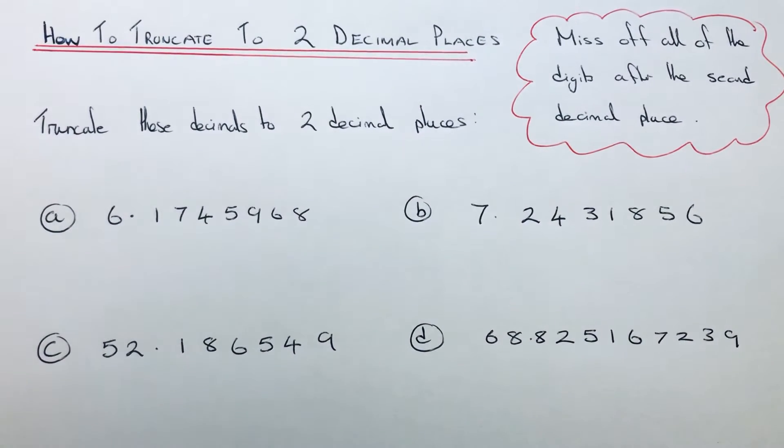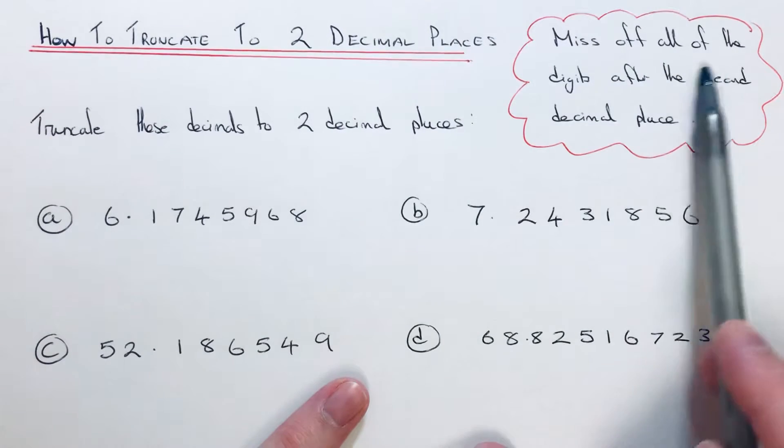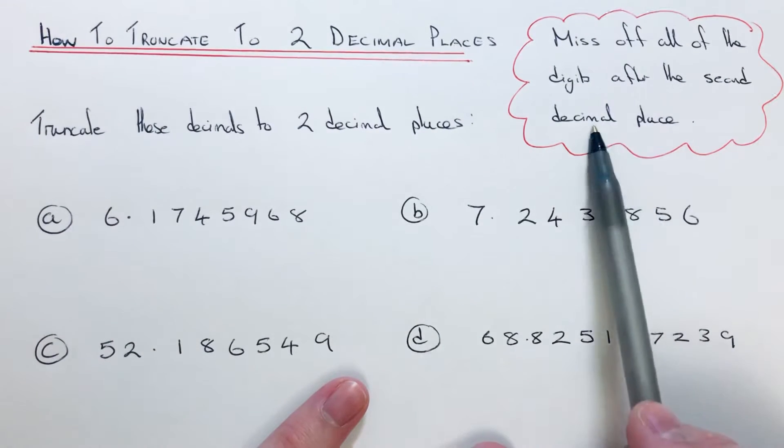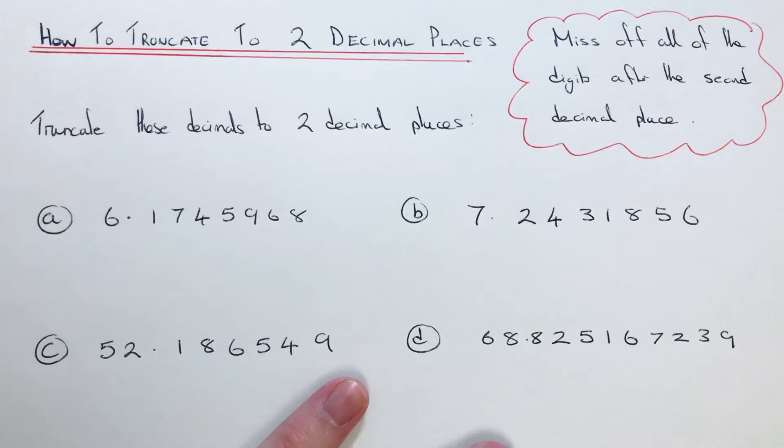Hi guys, welcome back. This is Maths 3000. Today I'm going to show you how to truncate a number to two decimal places. To do this, you just need to miss off all the digits after the second decimal place. There's no need to follow your normal rules for rounding off—you're just cutting the number off.